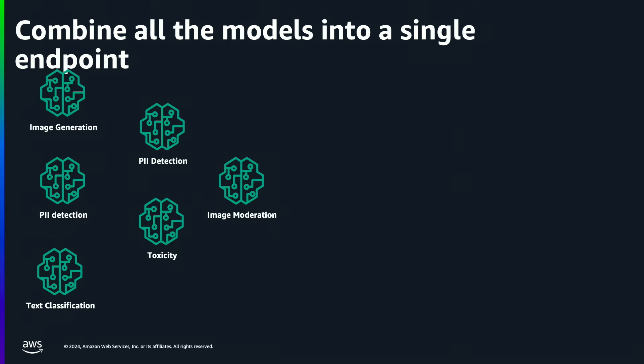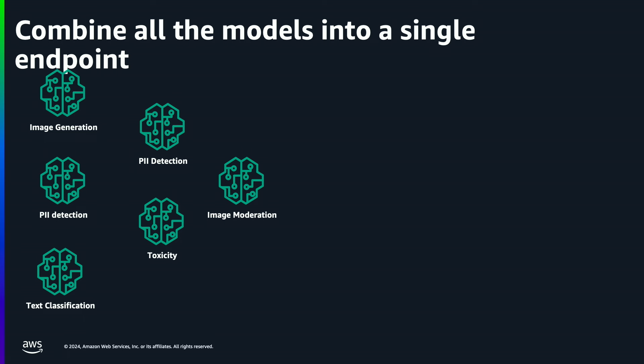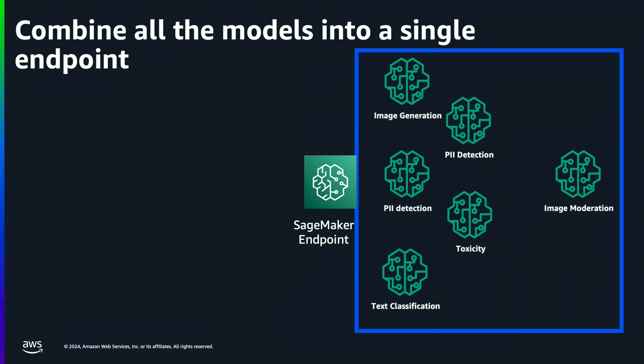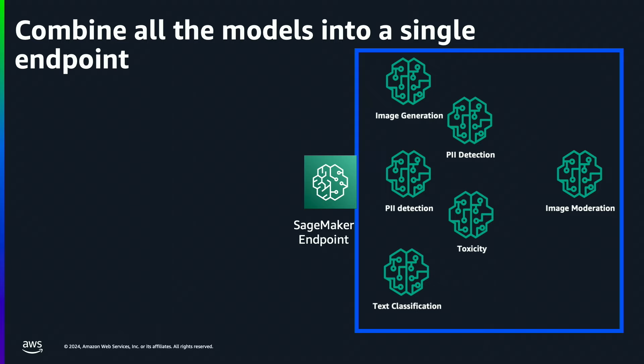How about we combine all these models into a single endpoint and have the client invoke the respective model and handle the orchestration logic? But what if these models can't fit into a single machine learning instance? How do we go about it?